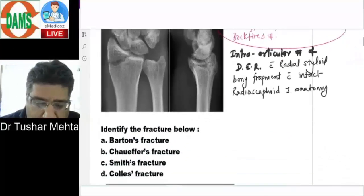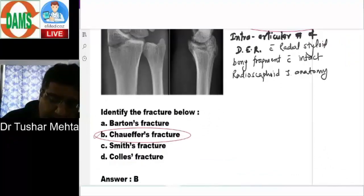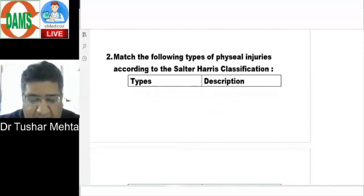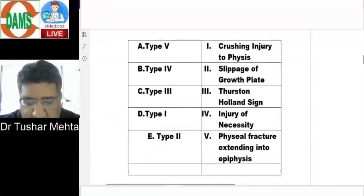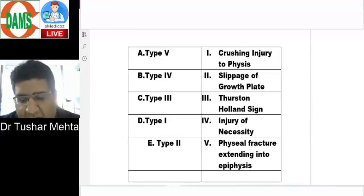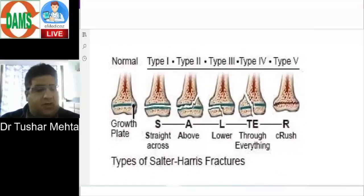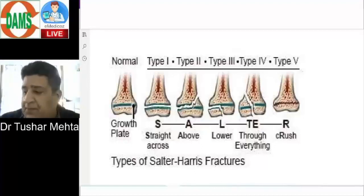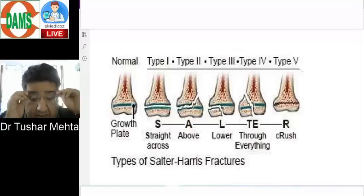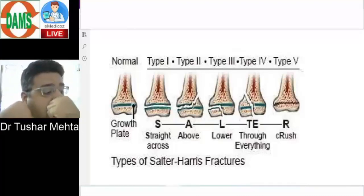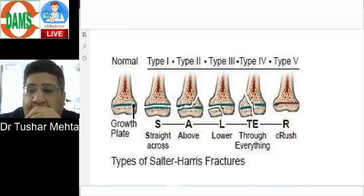So that's your answer — Chauffeur's fracture. Now let's talk about the second question, my personal favorite: match the following types of physeal injuries according to the Salter-Harris classification. They mention five types and five names to match. There is no point getting confused — you just need to remember the mnemonic for this entire topic. When we talk about physeal trauma, the classification given is the Salter-Harris classification, which divides physeal trauma into five types.